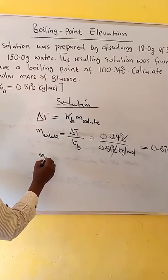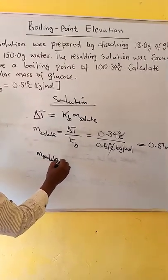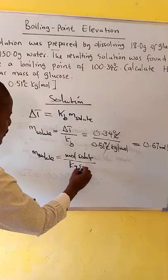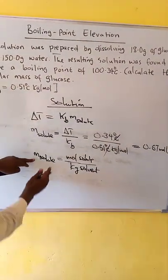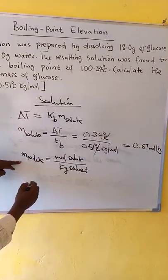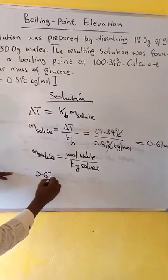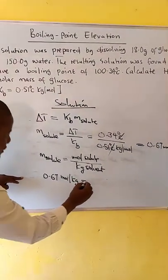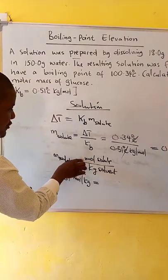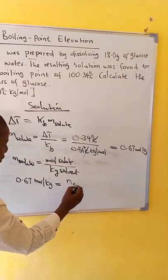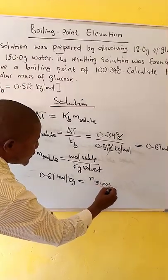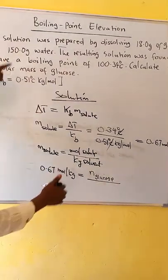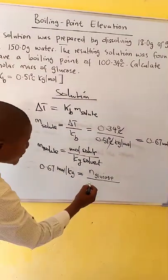We know that the molality of the solute is equal to moles solute over kg solvent. In this case we have the molality of 0.67 mole per kg, which equals the moles of glucose over kg of solvent. We have water, 150 grams, which when we convert to kg is 0.150 kg.